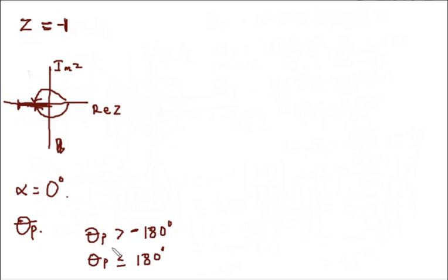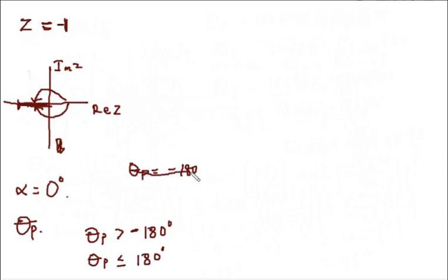However, theta_p has to be greater than minus 180 degrees. If you start calculating from one direction, you get theta_p equal to minus 180, and it does not satisfy this condition. So that option is out. If a complex number lies on the negative real axis, you have to pick the positive direction. So theta_p in this case is equal to 180 degrees.